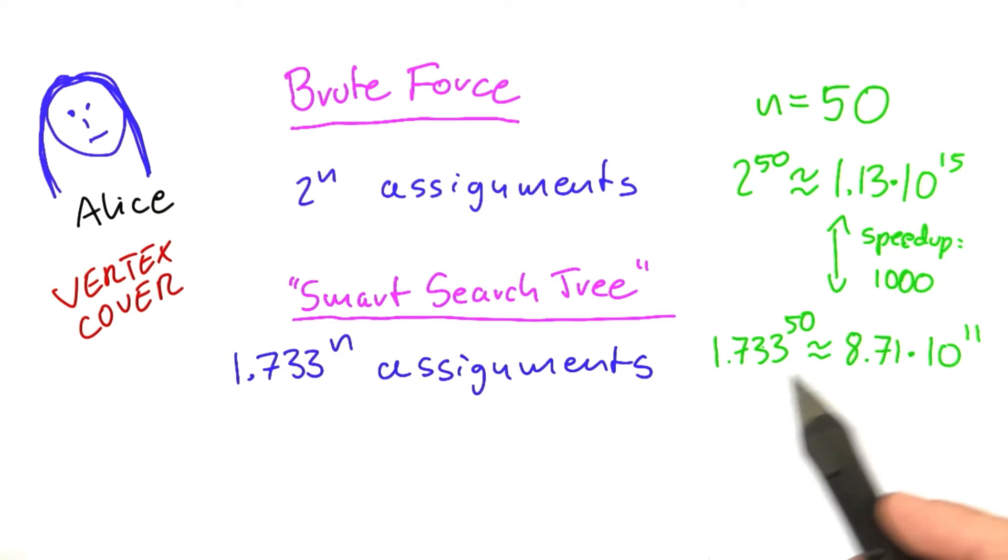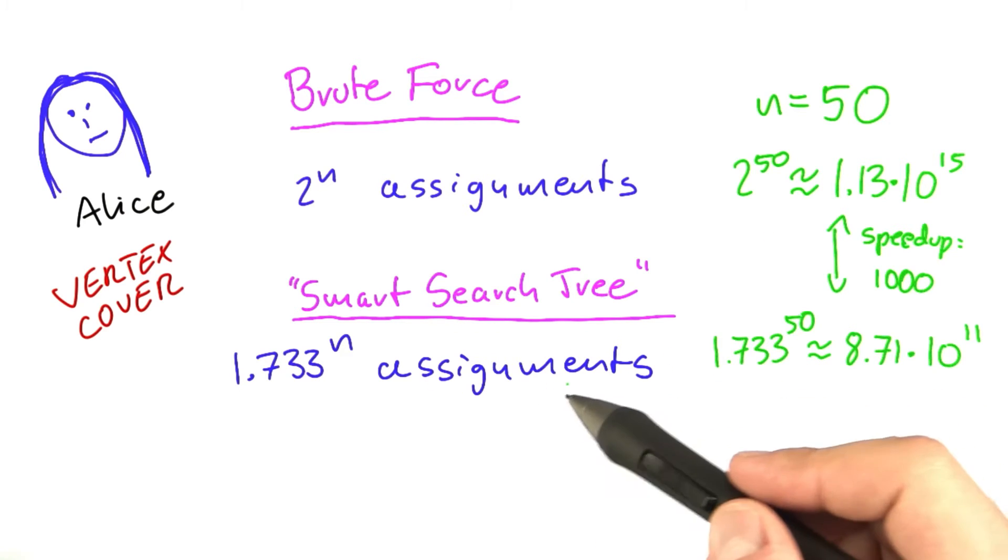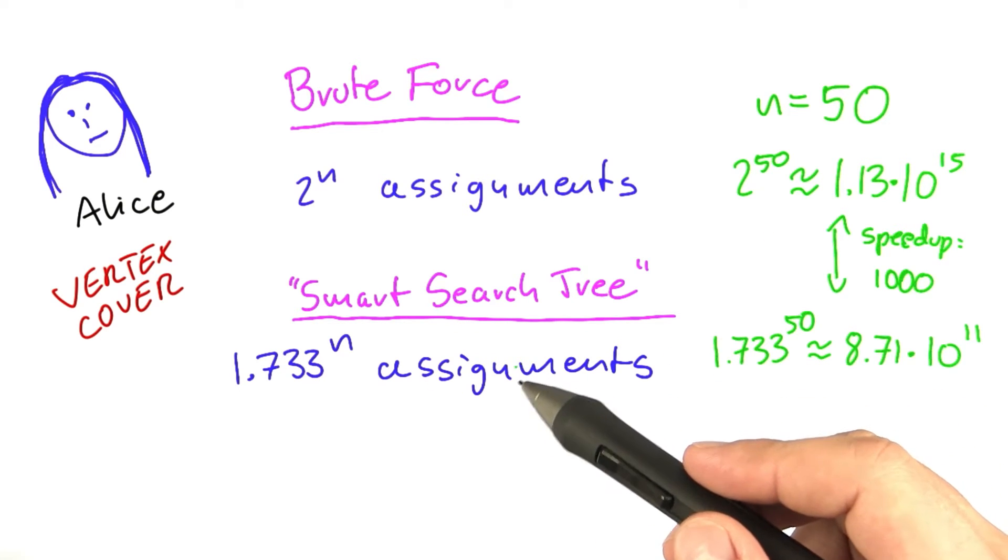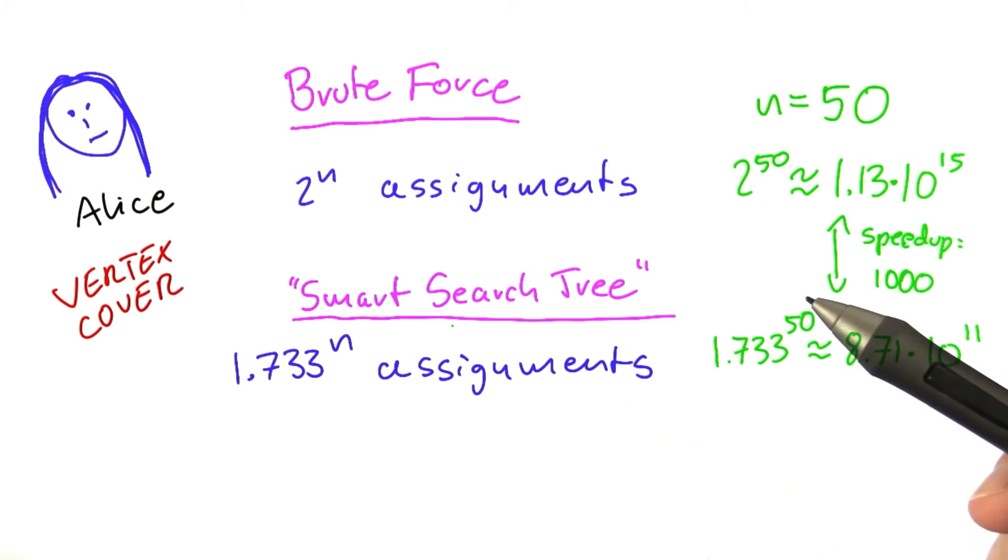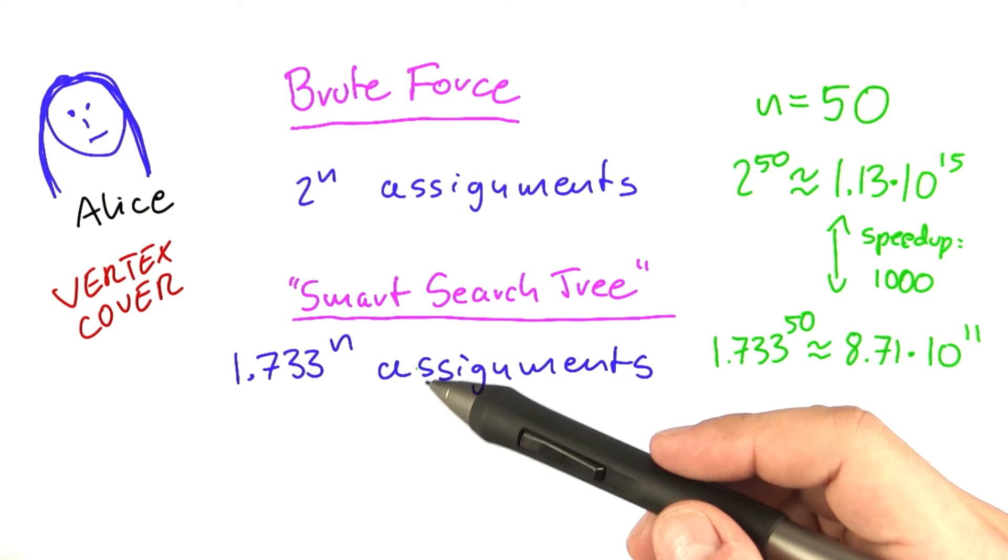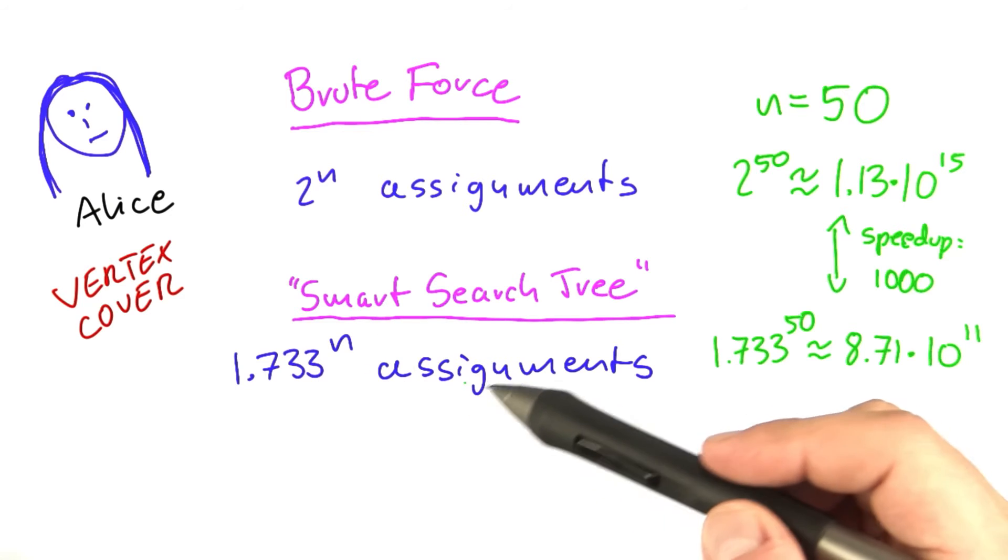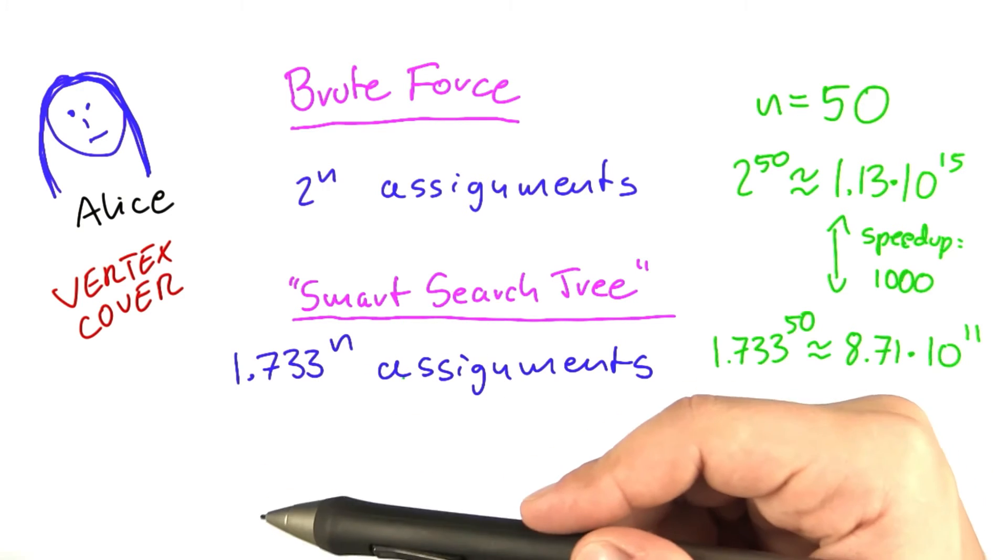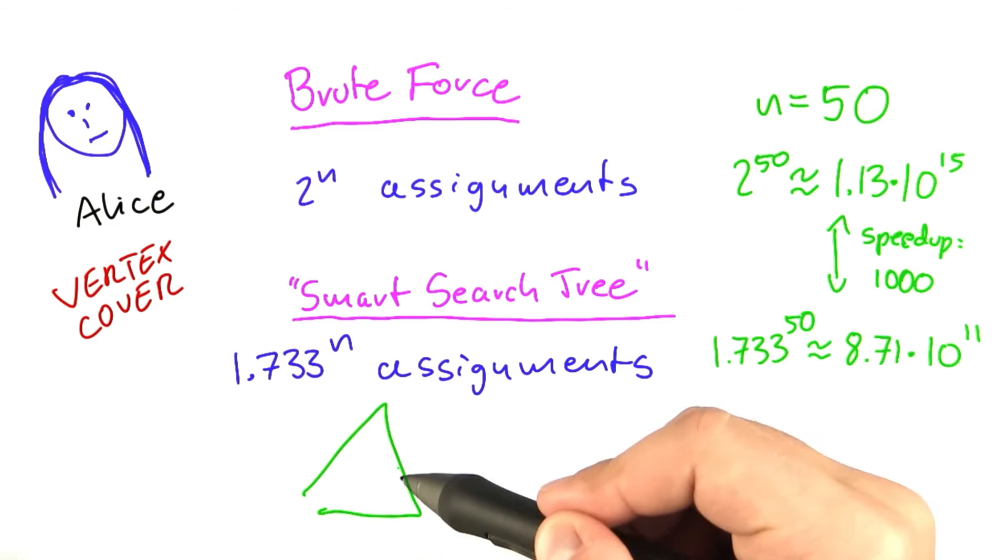That speedup will become larger as n grows larger. And the other thing is that this down here is only a worst-case analysis. In many practical cases, the search tree will be much smaller. Because first of all, as we saw, it's often the case that you assign more than just two vertices. And in that case, the tree doesn't become as high.